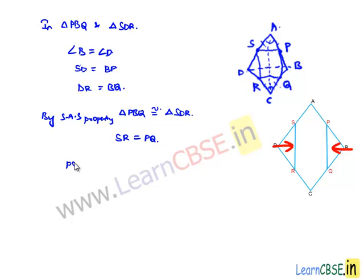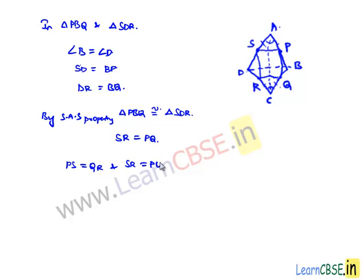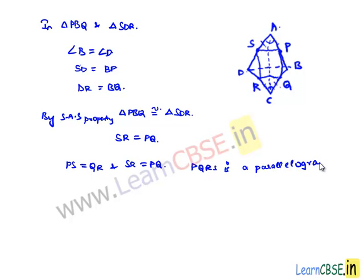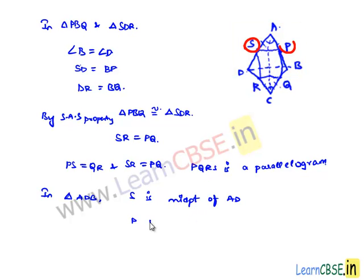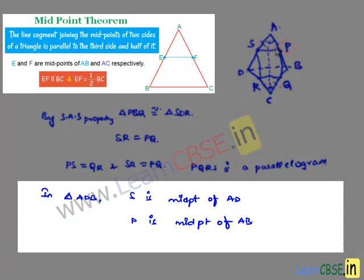In the first step we got that PS is equal to QR, and here we got that SR is equal to PQ. So PQRS is a parallelogram. Now if we consider triangle ADB, S is the midpoint of AD and P is the midpoint of AB. By the midpoint theorem we can say that PS is parallel to BD.